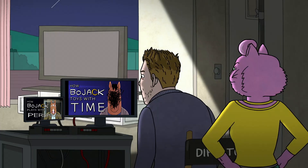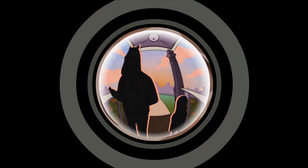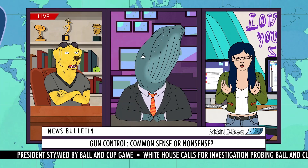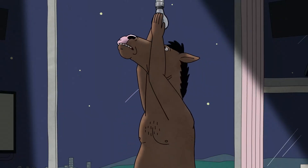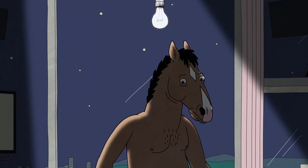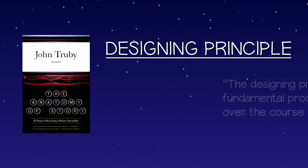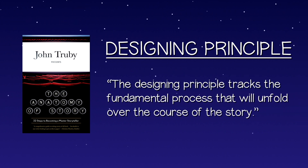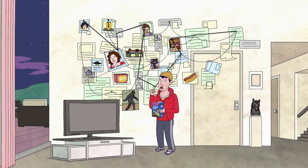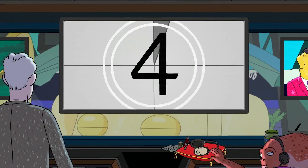Over my last two videos I've demonstrated how some of the show's most inventive episodes use perspective and time to convey meaning, but I've also argued that the reason these episodes work so well is that they are each built around a strong central idea. This idea, which John Truby calls the designing principle, outlines the fundamental process that will unfold over the course of the story, and so in this video I'll be analysing the designing principles behind three of Bojack's finest half-hours to show how they push the boundaries of television as a storytelling medium.